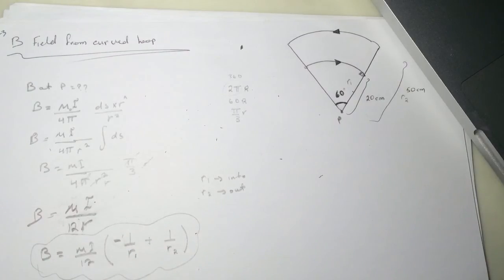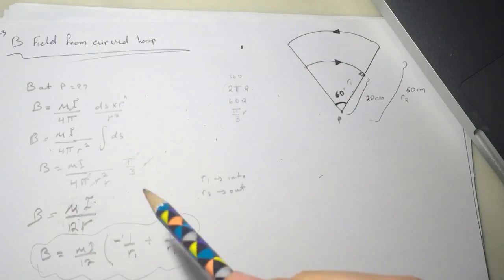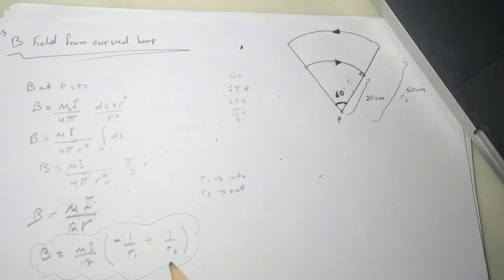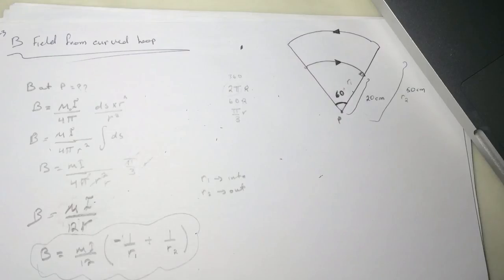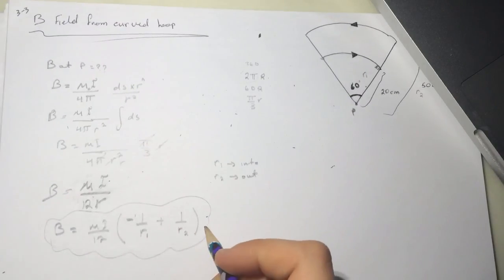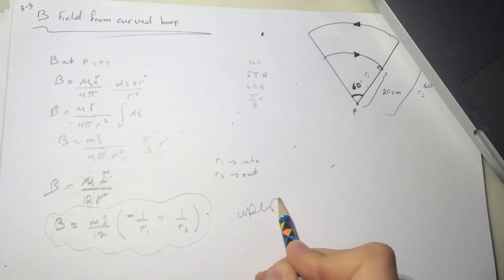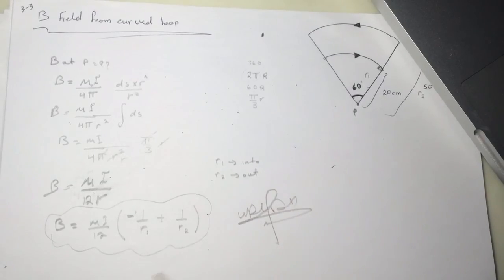The total B equals uI over 12 times (1/R1 minus 1/R2), where the negative sign indicates R1 points into the screen and R2 points out of the screen. If your final answer is negative, that means the net magnetic field points into the screen. Hope this helps and good luck!